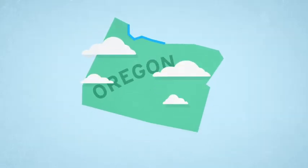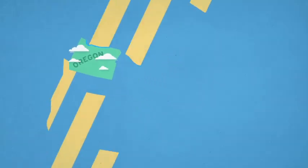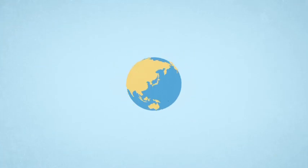Gill Nets have been banned in every other river in Oregon, including the ocean, most of the United States, and the world.